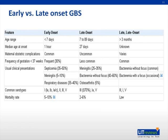This is a very important slide. Early onset GBS is commonly associated with maternal complications. The initial presenting signs are not different from neonatal sepsis and can include lethargy, apnea, etc. The clinical syndromes most commonly associated with early onset GBS include bacteremia without focus, pneumonia, and meningitis. The mortality rate is higher than in other forms of GBS, with outcomes especially worse in premature infants and in those who present with septic shock.